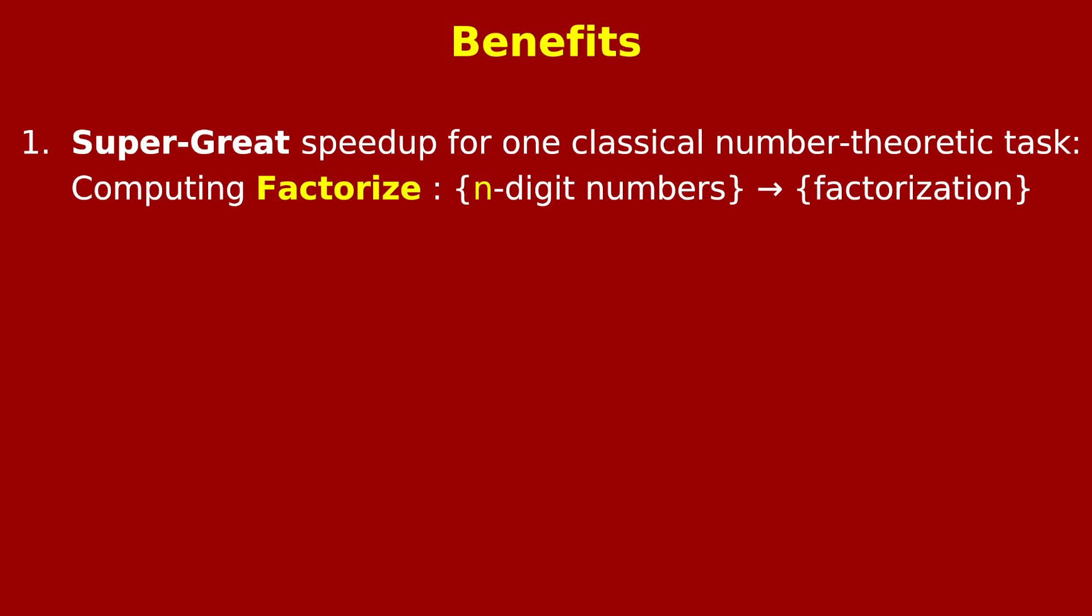Again, you can ask, what are the benefits of using quantum randomness to solve algorithmic tasks? Well, the most famous benefit is the one we just saw. You would get a super great speedup for a particular classical number-theoretic task, computing the factorization of an n-digit number.